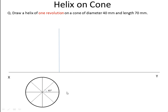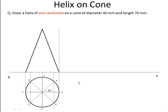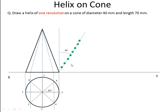Divide the top view circle into 8 equal parts. Give the name to each point: 1, 2, 3, 4, 5, 6, 7, 8. Take the projections. I have drawn the triangle for the front view. Now divide the height into 8 equal parts. Divide this line into 8 equal parts, then draw horizontal lines from all the points.